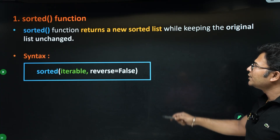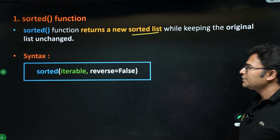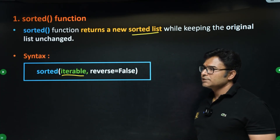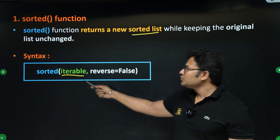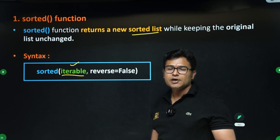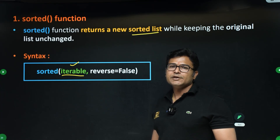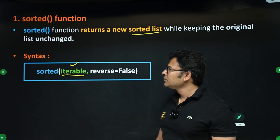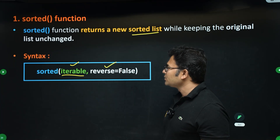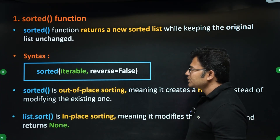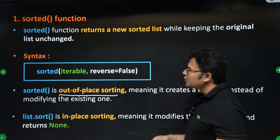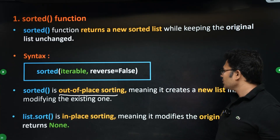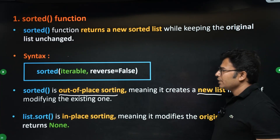sorted() is a function which will return a new sorted list while keeping the original unchanged. Even though we'll take examples as a list, it can be used on any iterable — a set, a tuple, or a string. The syntax is: sorted(iterable, reverse=False), which gives ascending order by default. It does out-of-place sorting, creating a new list without modifying the original.